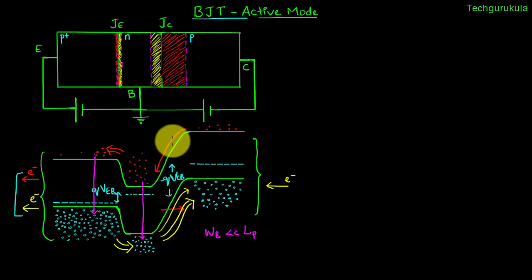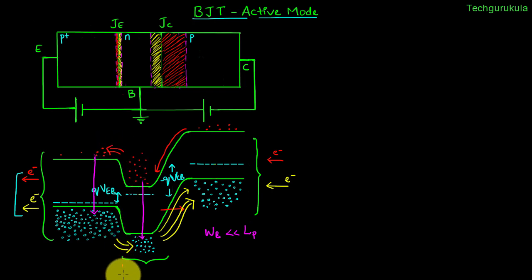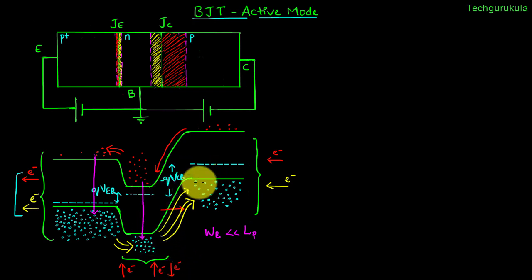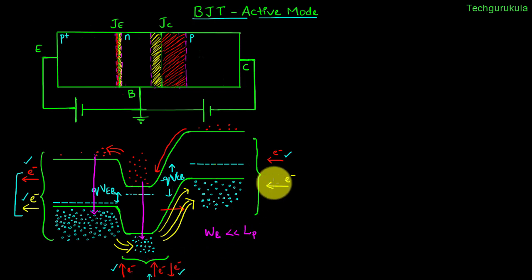These two components are called the leakage current I_0. The number of electrons supplied into the collector by the supply equals the leakage current that flows. At the base side, the electrons to be supplied equal the number of electrons injected across the emitter junction from base to emitter, plus the electrons required to recombine with holes injected from emitter to base, minus the electrons required for the leakage current. Overall, the number of electrons flowing into the device equals the number flowing out per unit time, and the current flowing into the device equals the current flowing out.